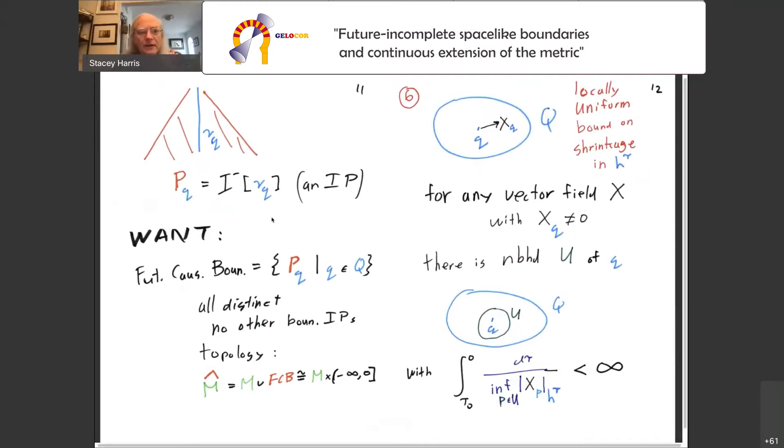Since we're talking about the future causal boundary, we want to look at pasts of, for each one of our foliates, let p sub q be the past of that foliate. We want all of these p sub q to form the causal boundary. Among things, we want them all distinct. We don't want there to be other boundary IPs. And we want the topology from the future chronological topology to reflect the nice behavior. What we're aiming for is that when I add the future causal boundary to M, what I am hoping to get is M cross minus infinity to zero, including zero. That's the simple thing that we want to get.